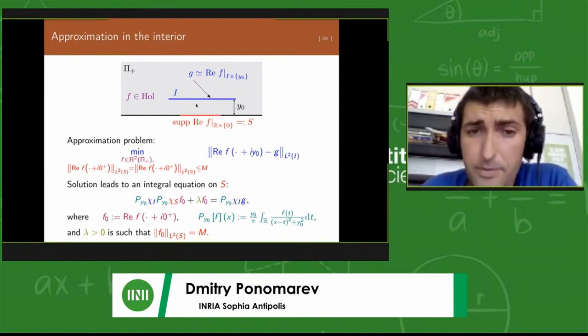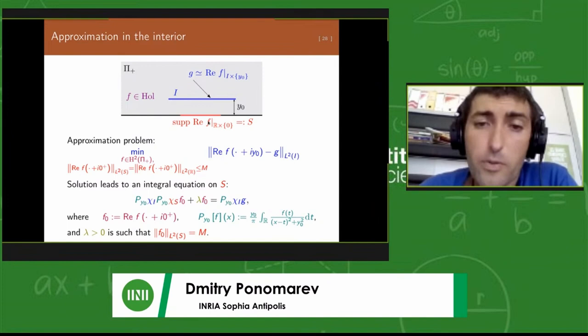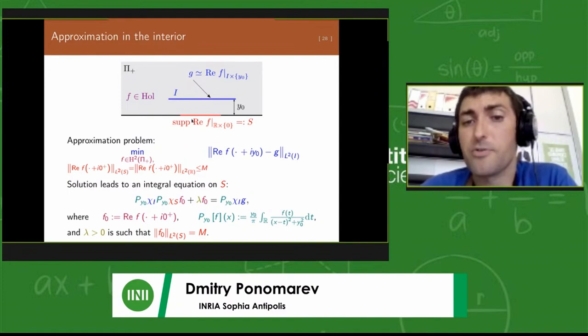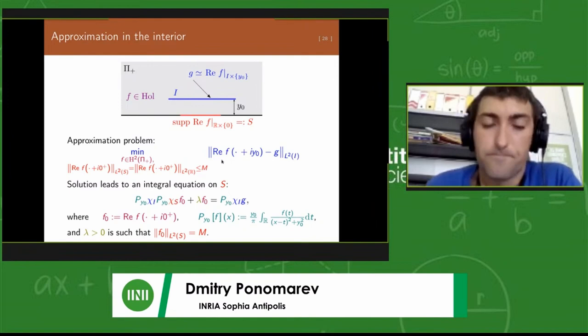What is interesting is that we can weaken the constraint and replace the constraint not just f on the j part, but we can constrain only the real part of that. That will be enough to regularize the problem. Then the solution reduces to an integral equation for the real part, the trace of the real part on j.